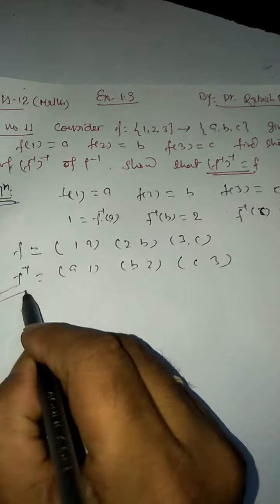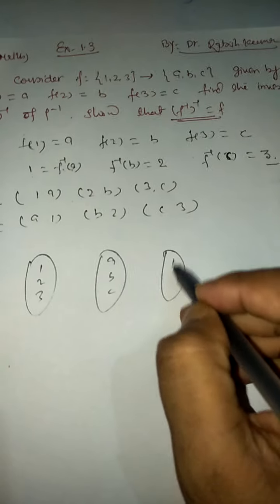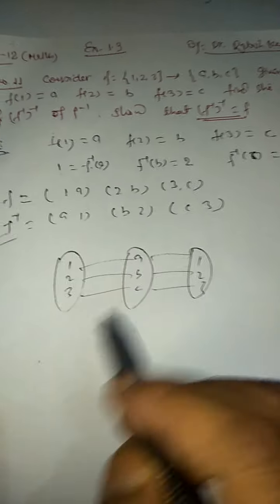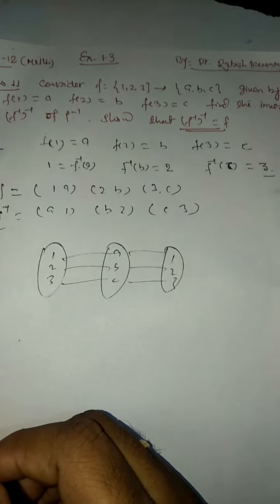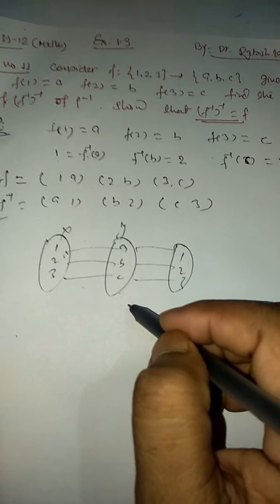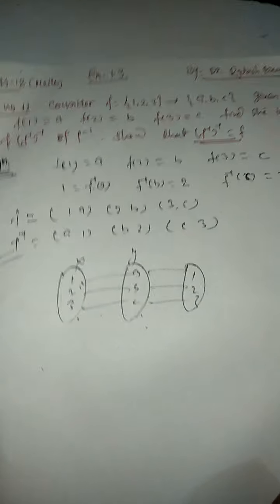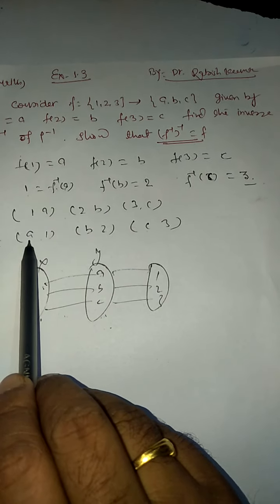This is how we define the function. Here we have {1,2,3} and here we have {a,b,c}. For the inverse, we need {1,2,3} again. To check if the inverse exists, we need to verify it's bijective - it must be a one-one function where each element has a distinct image, and nothing in the codomain is left unmapped. So this function is bijective and we can find the inverse.